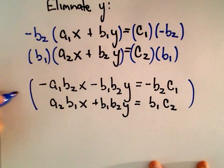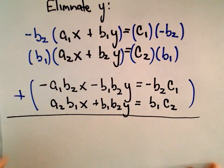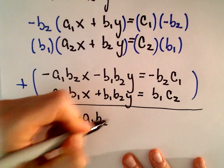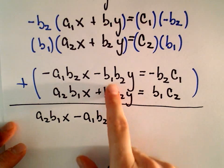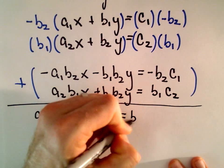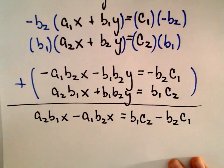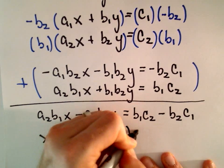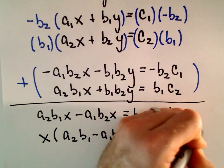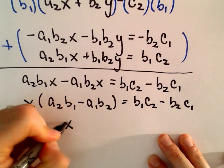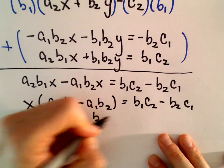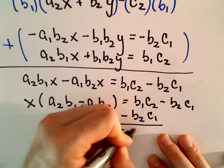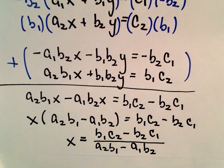Doing elimination by addition again, the y terms cancel. Writing the second term first: a2·b1·x minus a1·b2·x on the left, and b1·c2 minus b2·c1 on the right. We factor out x to get (a2·b1 minus a1·b2)·x equals b1·c2 minus b2·c1. Dividing both sides by (a2·b1 minus a1·b2) gives us our solution for x. Those are our solutions.